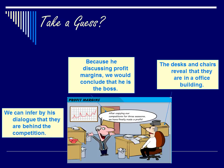Did you find the answers? The table and topic reveal that they are in a corporate boardroom. Because he is in the front of the room, standing, we would conclude that he is the boss. We can infer by his dialogue that they are behind the competition, and therefore are not on the cutting edge.